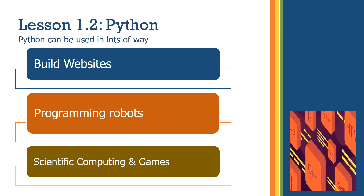Coding with some languages is really hard to learn, but with Python it's easier and more fun. Python is a general-purpose language, which means you can make all kinds of different programs with it — you can build websites, program robots, do scientific computing, and make games.